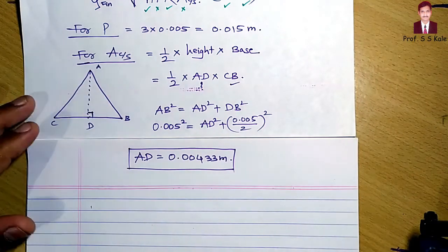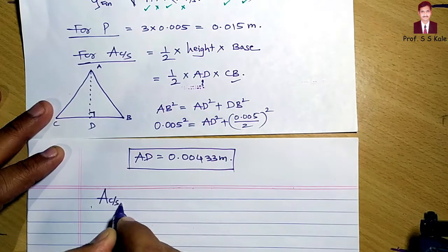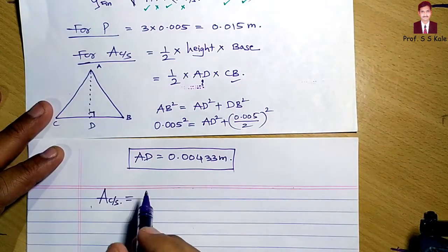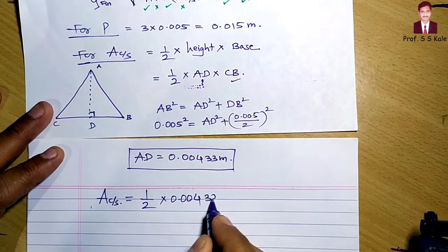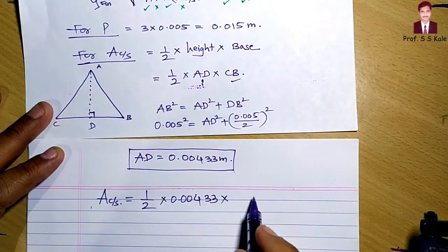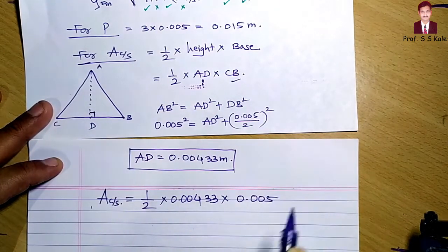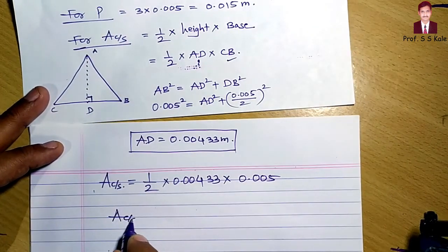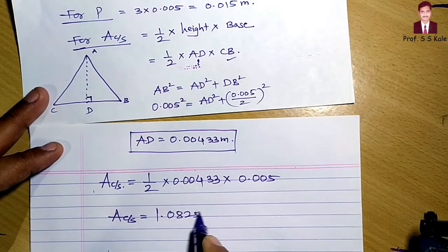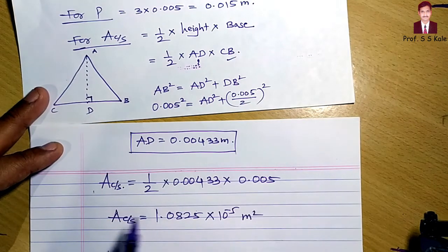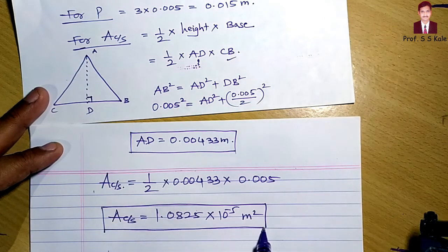We determined AD because we need the cross-sectional area. The cross-sectional area Ac = ½ × AD × CB = ½ × 0.00433 × 0.005. Calculating this gives Ac = 1.0825 × 10⁻⁵ meter squared.